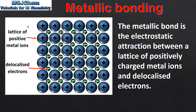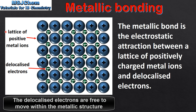In this diagram on the left we can see the metallic structure. The metallic structure is composed of a lattice of positive metal ions and delocalized electrons. So the metallic bond is the electrostatic attraction between the lattice of positive metal ions and the negatively charged delocalized electrons.